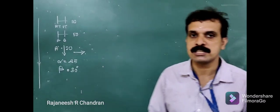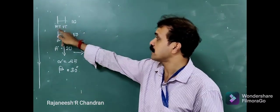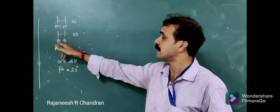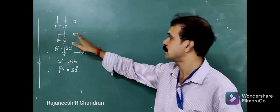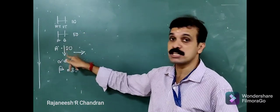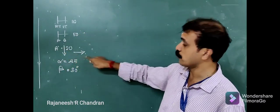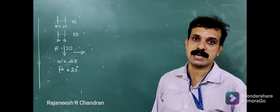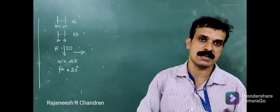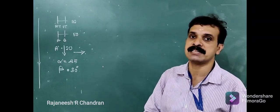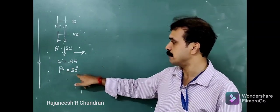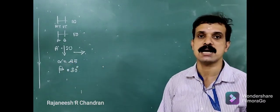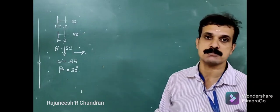The given data: the projectors drawn through the traces of line AB are 110 mm apart, and those drawn through its endpoints are 50 mm apart. Point A is 20 mm below HP and in front of VP. The top view of the line is inclined at beta = 30 degrees, and the front view is inclined at alpha = 45 degrees.